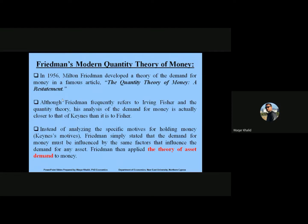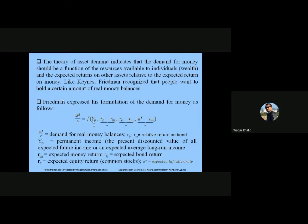Friedman applied the theory of asset demand to money. The theory of asset demand indicates that the demand for money should be a function of the resources available to individuals — wealth — and the expected returns on other assets relative to the expected return on money.